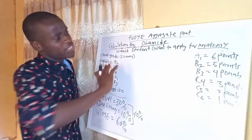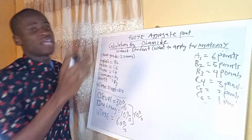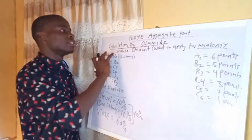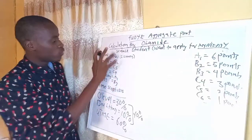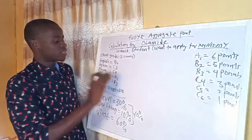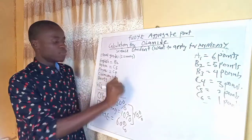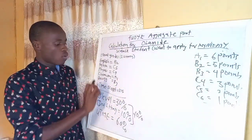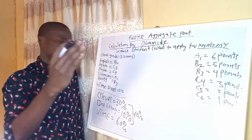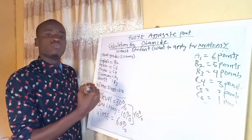I will be taking you through how to calculate the four-year aggregate point. Without wasting much of your time, let's go into the calculation. This is a result for a candidate called Olamide, a science student applying for Anatomy. He has the following grades in O-level: English B2, Mathematics C5, Physics C4, Chemistry A1, Biology B3, and the UTME score is 215.